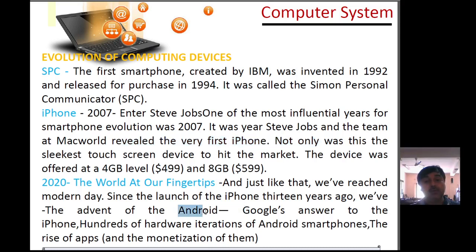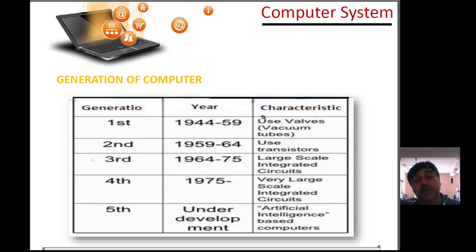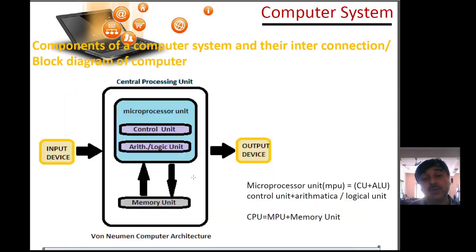Android mobile phones came to market with Google supporting it, modernizing the technology. Different generations: first generation 1944 to 1959 used vacuum tubes, second generation 1959 to 1964 used transistors, third generation used integrated circuits, fourth generation used very large scale circuits, and fifth generation is based on artificial intelligence.